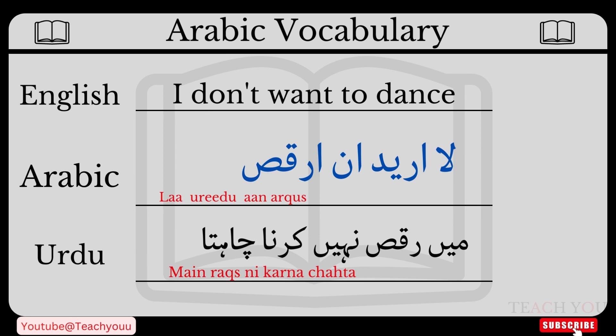I don't want to dance. In Arabic, how can we say it? La uridu an arqus. In Arabic we say: La uridu an arqus. And if your answer is yes — I want to dance — then in Arabic you say: Na'am, uridu an arqus.